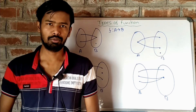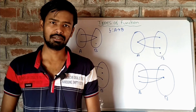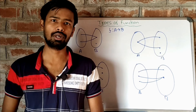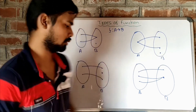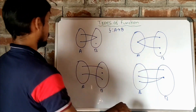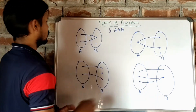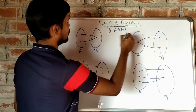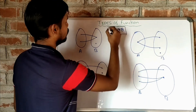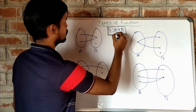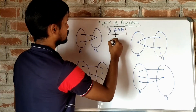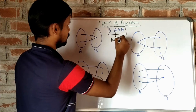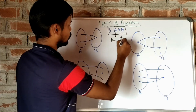To know about functions, look at the board. F maps A to B is the function. Clearly, A is the domain and B is the codomain.